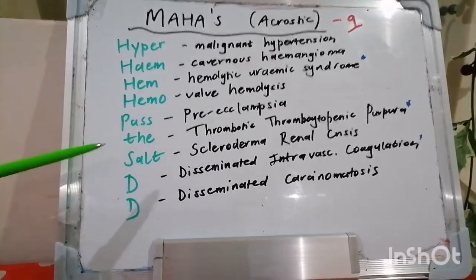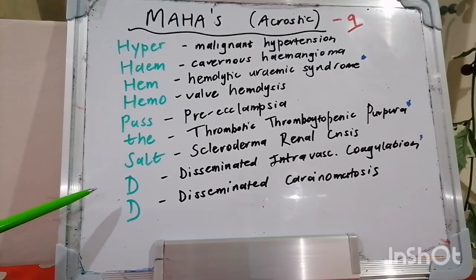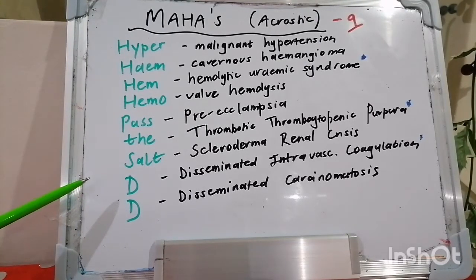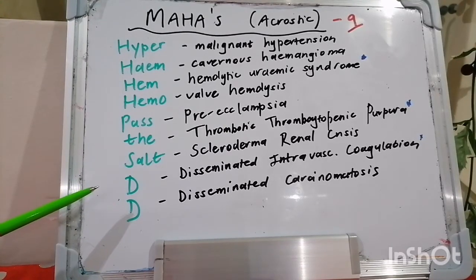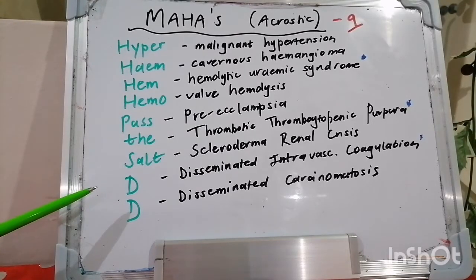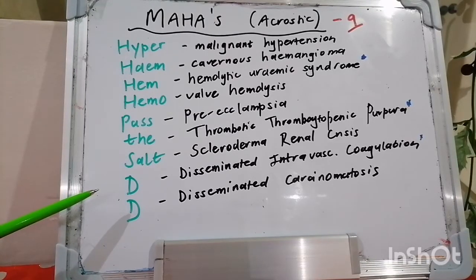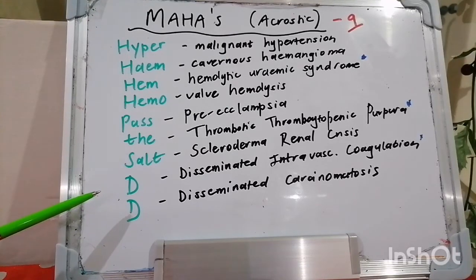Let's talk more about disseminated intravascular coagulation. We often see this in the setting of severe sepsis most commonly. The pathophysiology is that there's damage to the endothelium which releases tissue factor, causing massive activation of the coagulation cascade, intravascular coagulation, and depletion of clotting factors. Causes are numerous: trauma, shock, sepsis — especially E. coli and Neisseria meningitidis — and malaria. Neoplasms can also cause it, such as lung, prostate, and pancreatic cancers.